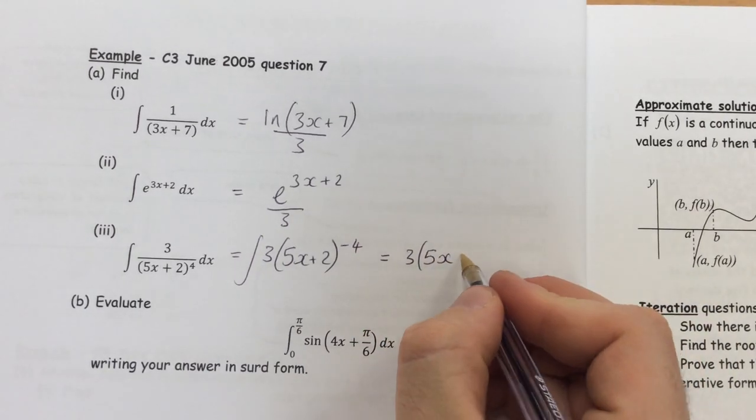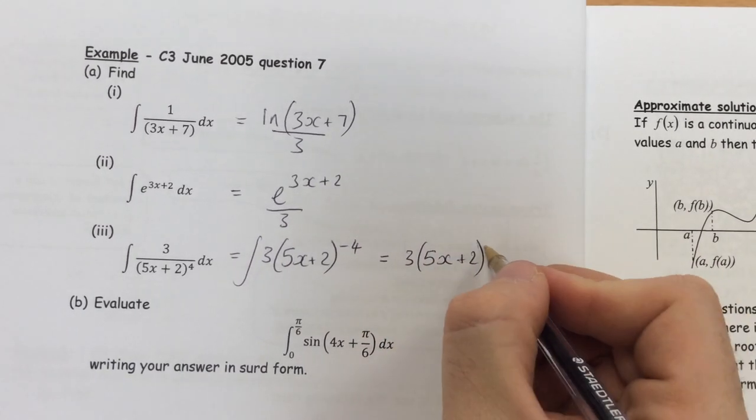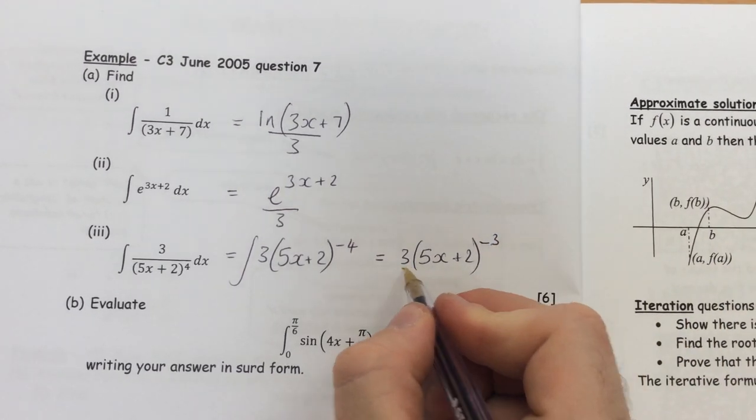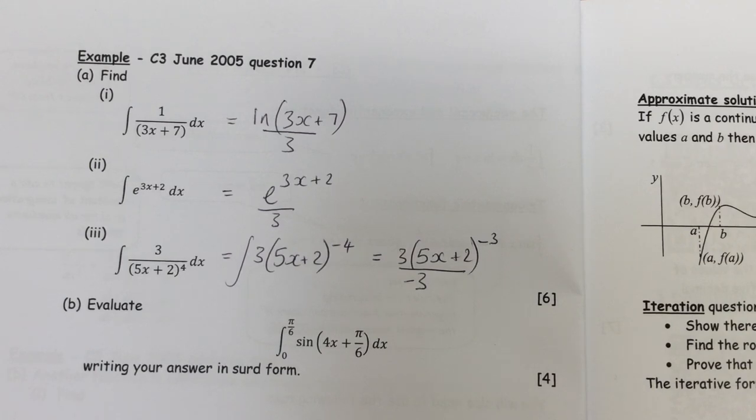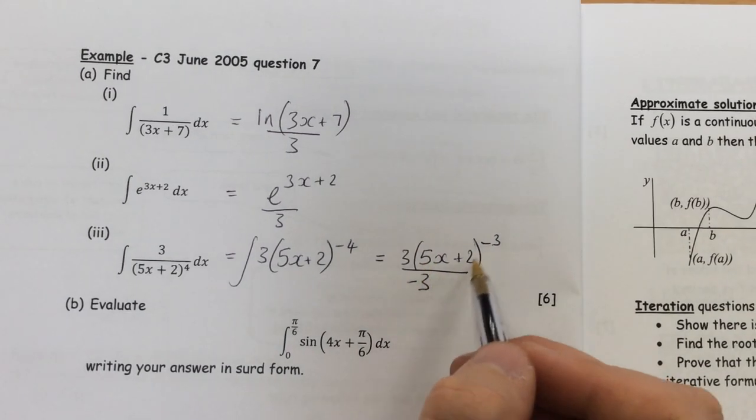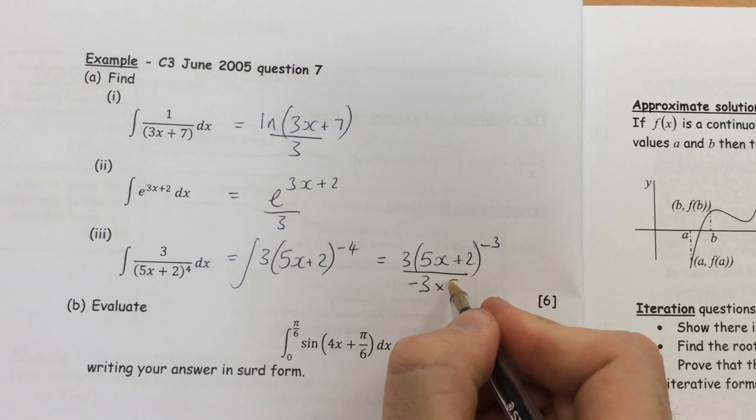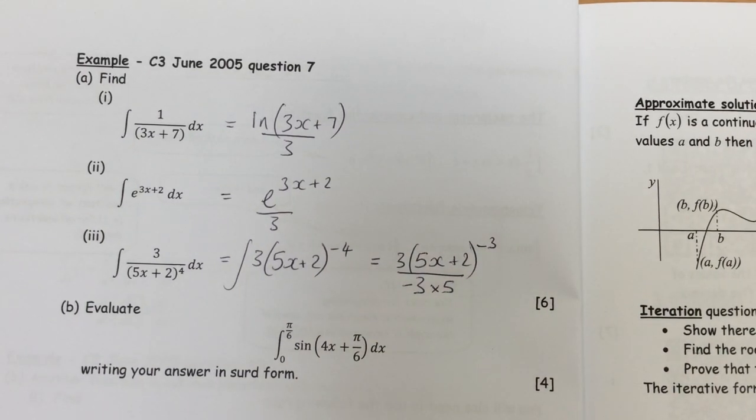So I'm going to have 5x plus 2, nothing's going to change, that's going to become minus 3. And then I'm going to divide by that new power of minus 3. But what else am I going to divide by in this case? Differential of this, which is 5. So I'm also going to divide by 5, so I'm going to have that 5 on the bottom there as well.